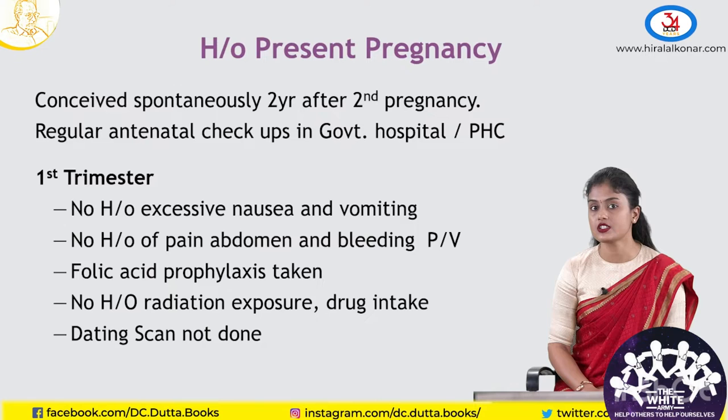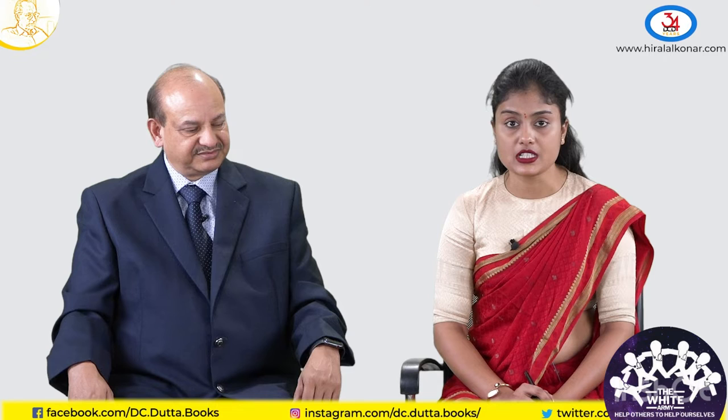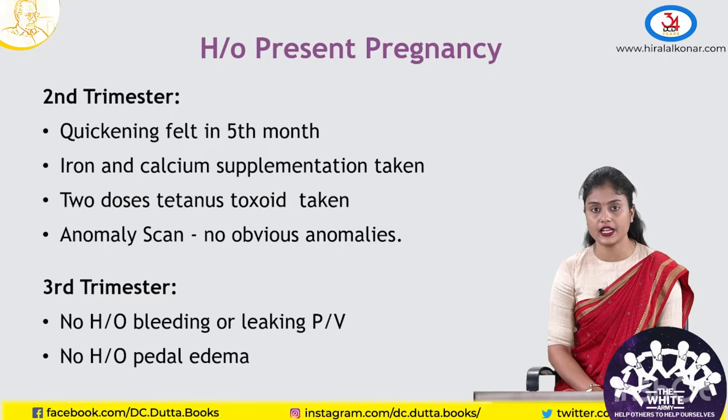Coming to the second trimester, quickening was felt at 5th month, iron and calcium supplements were taken, and 2 doses of tetanus toxoid were taken. Anomaly scan was done and said to have no obvious anomalies. In third trimester, no history of leaking or bleeding per vagina and no history of pedal edema. She perceived fetal movements well and came today with the present complaints.